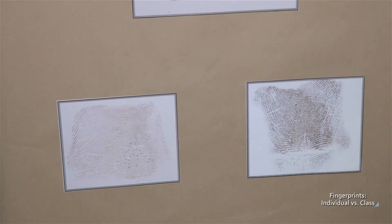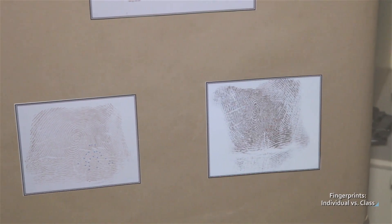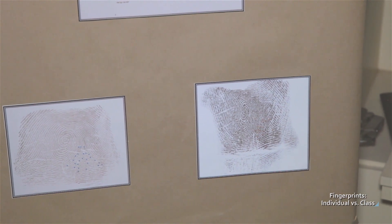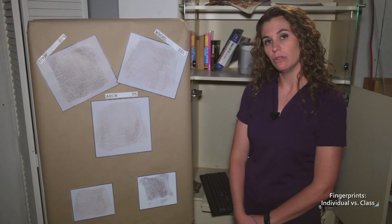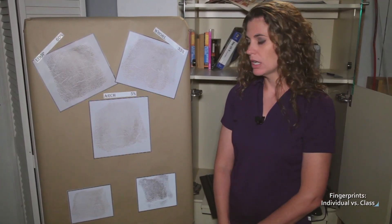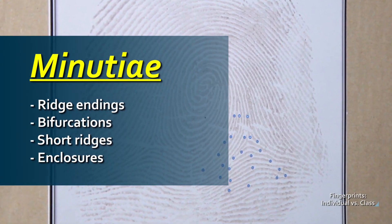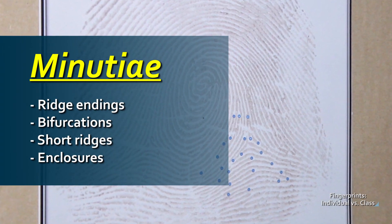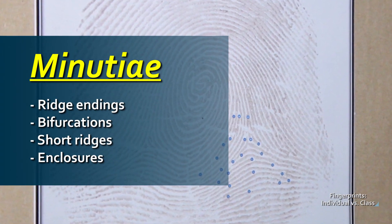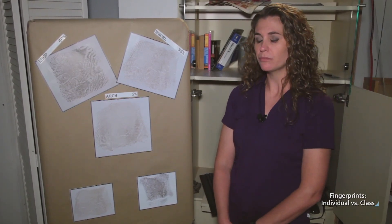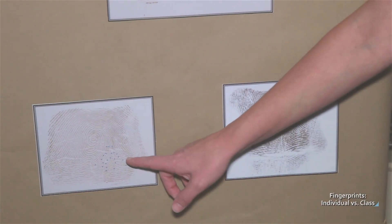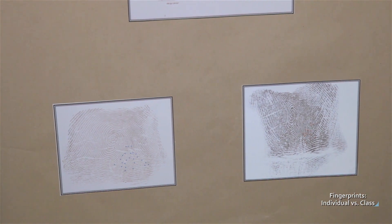When we're talking about individual characteristics, we're looking at level two and level three detail. Level two detail is your minutia. Different minutia include ridge endings, bifurcations, short ridges, and enclosures. When you start to look into the fingerprint pattern at the individual minutia, you can start to see differences — that's what puts you into an individual characteristic.